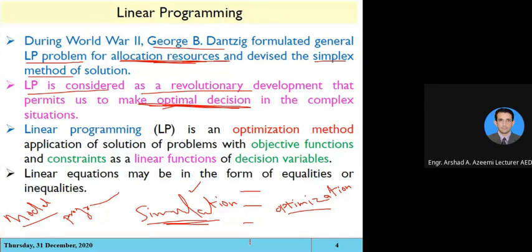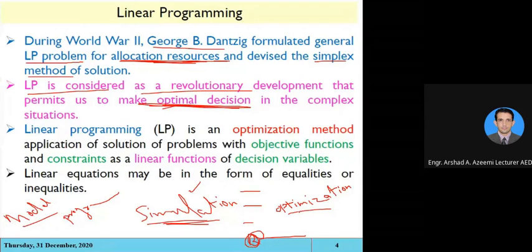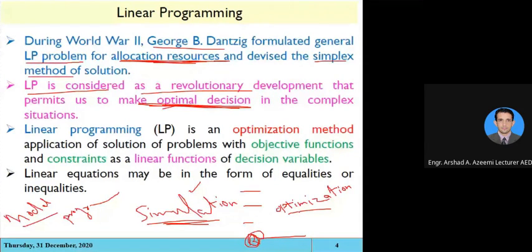If you have some resources and you achieve the maximum benefits from the available setup — getting the maximum profit from the available resources — this is called optimization. In linear programming, we are optimizing our available resources. We have limited resources available and we obtain the maximum possible benefit or maximum possible profit. So linear programming is an optimization method, involving the application of solution of problems where the objective function and constraints are linear functions.